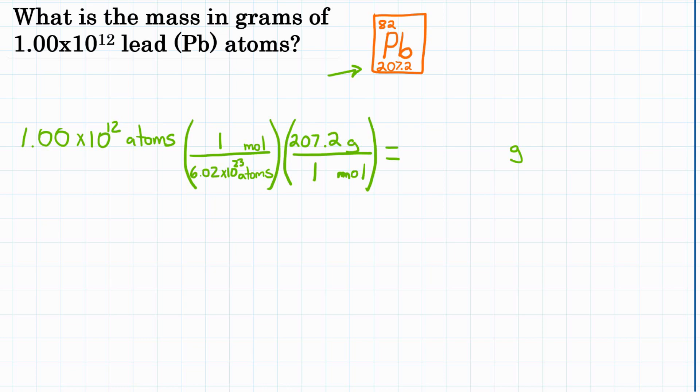So our problem is all set up. Now we want to solve. What you're going to punch in your calculator is going to be 1.00 times 10 to the 12th. Okay, we would next multiply by the top of the first fraction, which is just 1. So we're going to skip that step because it won't change anything. So we're going to divide by the bottom,